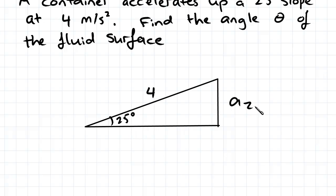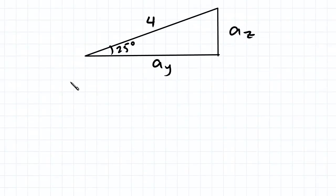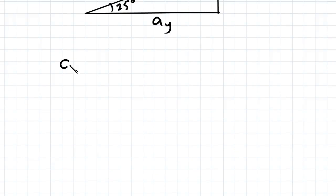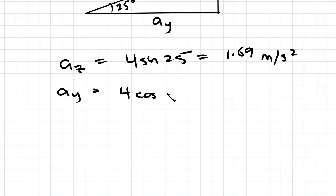So we've got az here, ay down here. And we just use sine and cos to find them. So we'll have az equal to 4 sine 25, which equals 1.69 meters per second squared. Ay will equal 4 cos 25, which equals 3.63 meters per second squared.